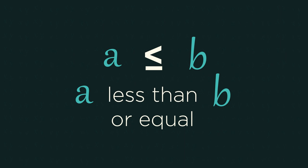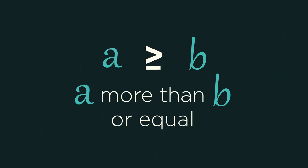A is less than or equal to B. The line underneath means or equal to. A is more than or equal to B.